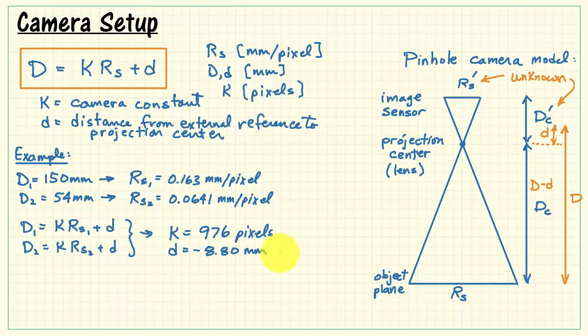Now, with two equations, you can solve that pair of equations simultaneously, and you come up with the camera constant and that distance from the projection center to the reference mark. In this particular case, the value is negative because my reference mark is actually the very front edge of the webcam, and that's in front of the projection center. If we go the other direction, then we would end up with a positive value.